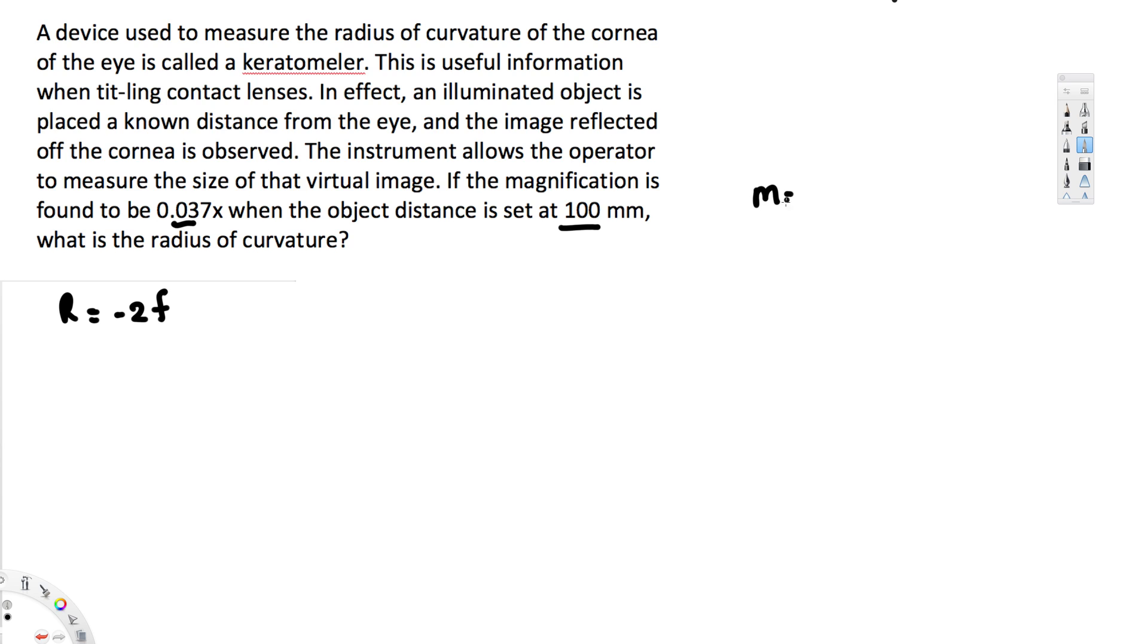We know that magnification is equal to -si/so, where si is the image distance, so is the object distance, and m is the magnification. From this, we can find the image distance because we have both the magnification and object distance. Rearranging the equation: si = -m × so. With m = 0.037 and so = 100 millimeters, multiplying these gives si = 3.7 millimeters.